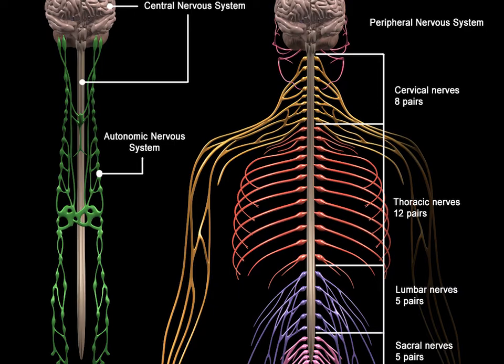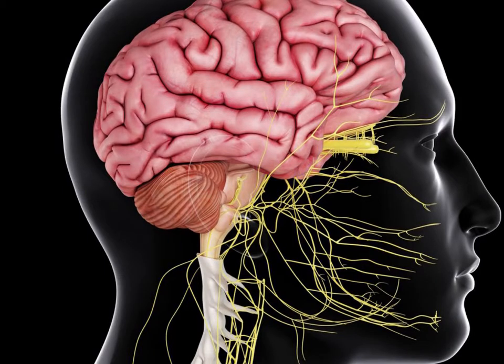Some authors also include sensory neurons whose cell bodies lie in the periphery, for senses such as hearing, as part of the PNS. Others, however, omit them. The vertebrate nervous system can also be divided into areas called gray matter and white matter.